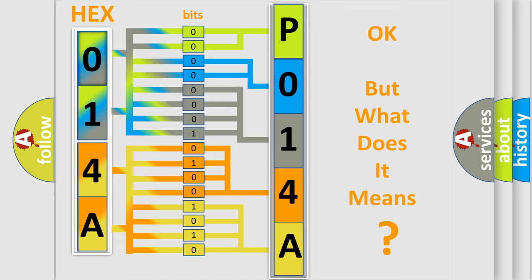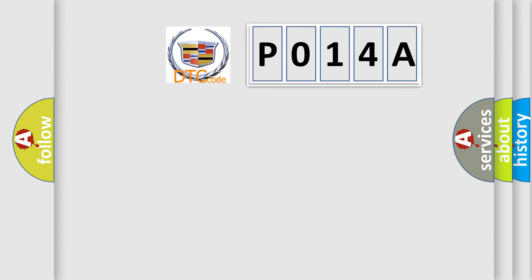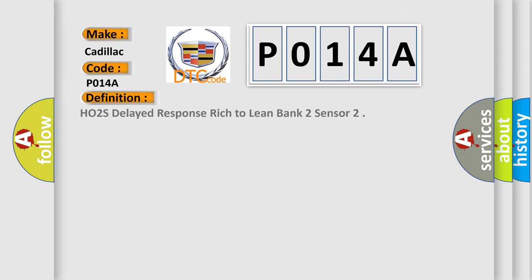The number itself does not make sense to us if we cannot assign information about what it actually expresses. So, what does the diagnostic trouble code P014A interpret specifically for Cadillac car manufacturers? The basic definition is: HO2S delayed response rich to lean, bank 2 sensor.